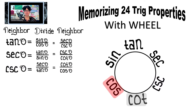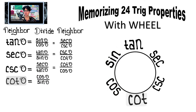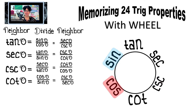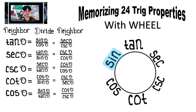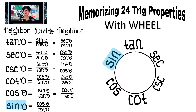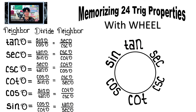Cosecant is secant over tangent, and cosecant is also equal to cotangent divided by cosine. Cotangent is cosine over cosecant, and cosine is cotangent over cosecant. Lastly, sine is cosine over cotangent, and sine is also tangent over secant.